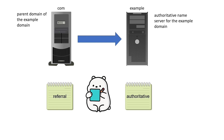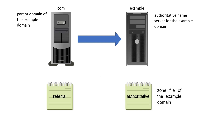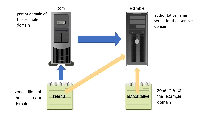Each authoritative Name Server needs both types of Name Server records. It requires an authoritative Name Server record in the Domain Zone file for which it resolves queries, and a Referral Name Server record in the parent Domain Zone file that forwards queries to this domain.